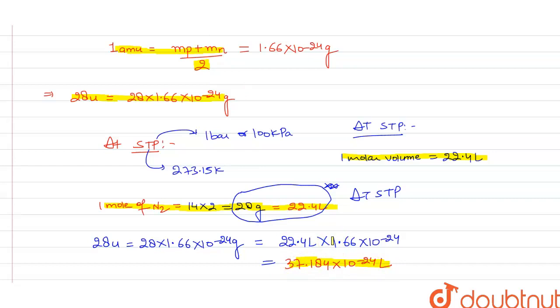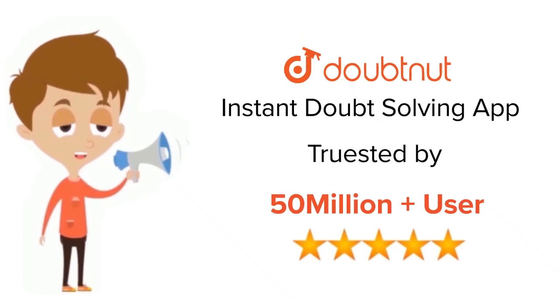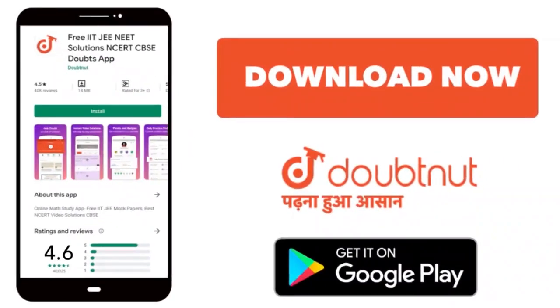So it is the volume occupied by 28 u or 28 amu of the nitrogen gas. So I hope you got this concept. Thank you. For class 6 to 12, IIT, JEE, and NEET level, trusted by more than 5 crore students, download Doubtnut app today.